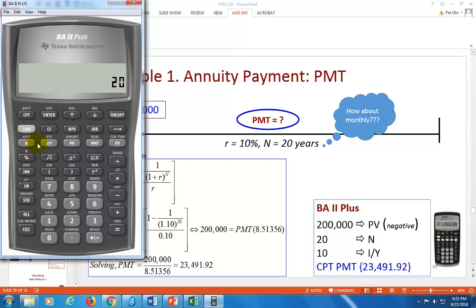20 is N and 10 is required rate of return, and so we simply compute payments. And that's it right here: $23,491.92.